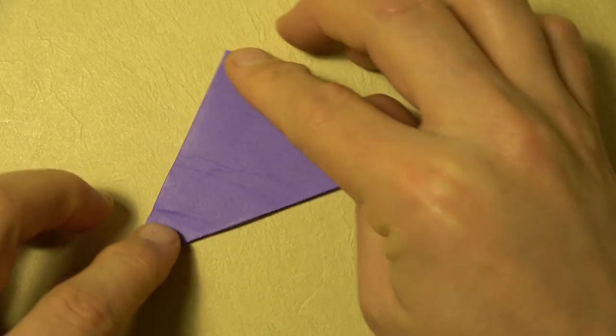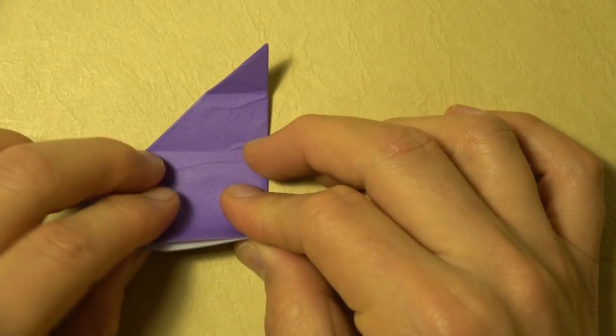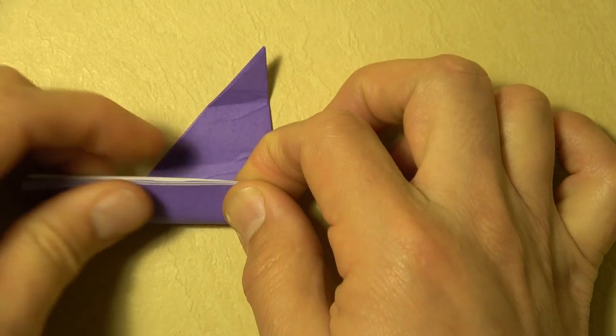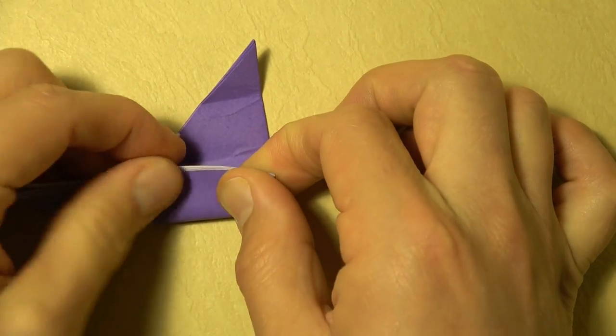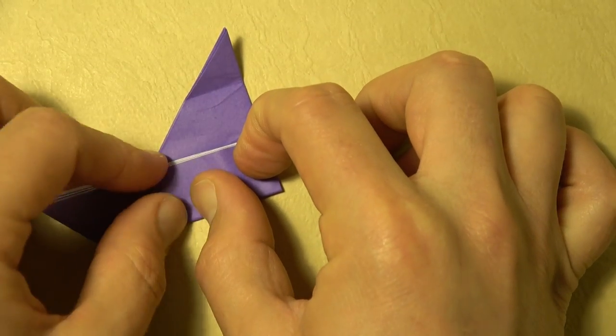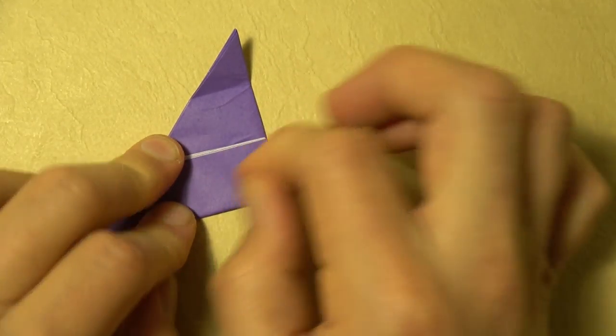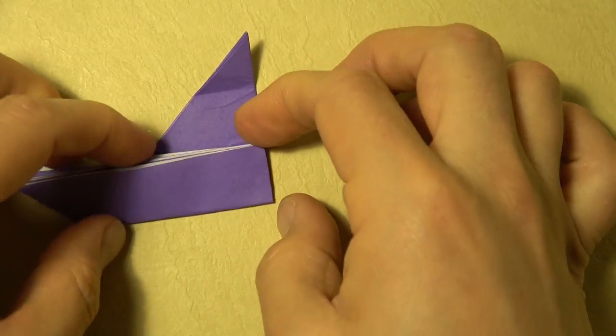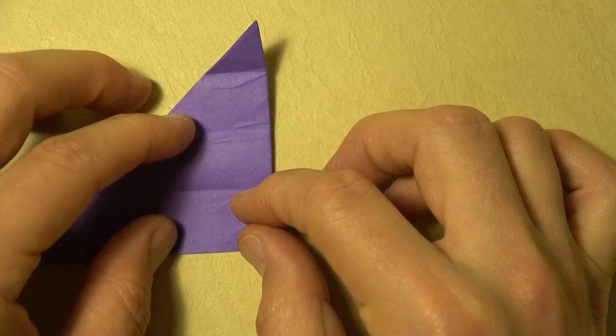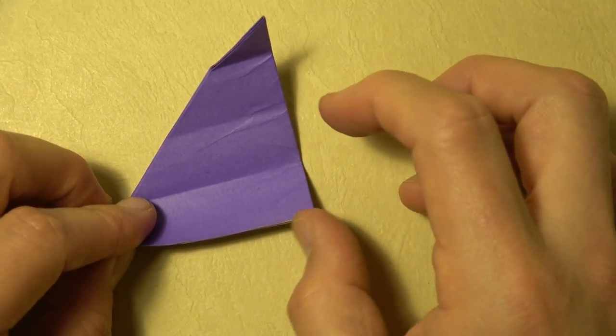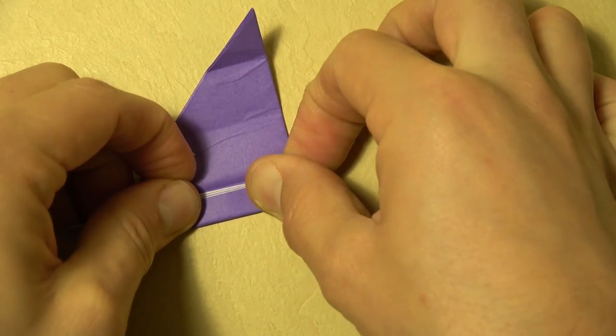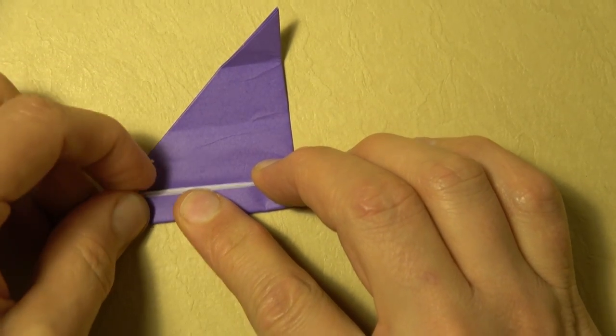And unfold and rotate and now let's fold this corner to this point. Try to hold the layers together as much as possible as you fold them up. They'll slide a little bit and that's okay. And unfold, so we've divided this edge into four: one, two, three, four. Now let's divide it into eight, so let's fold this edge to the crease. Remember, keep the layers together as much as possible.